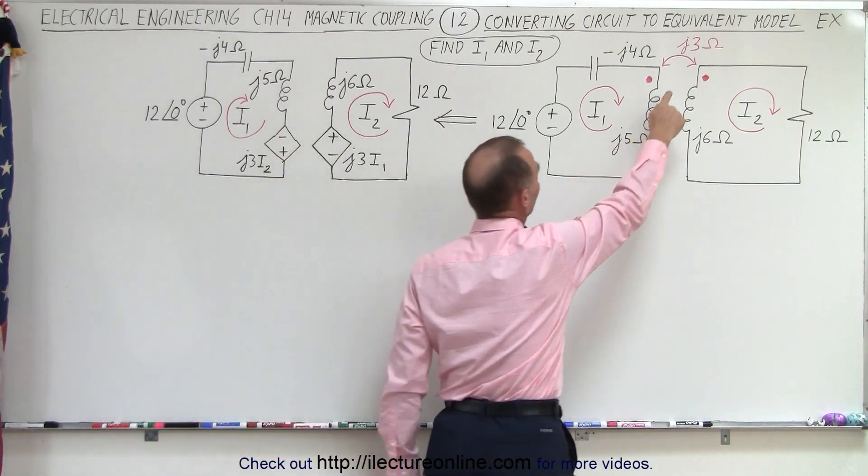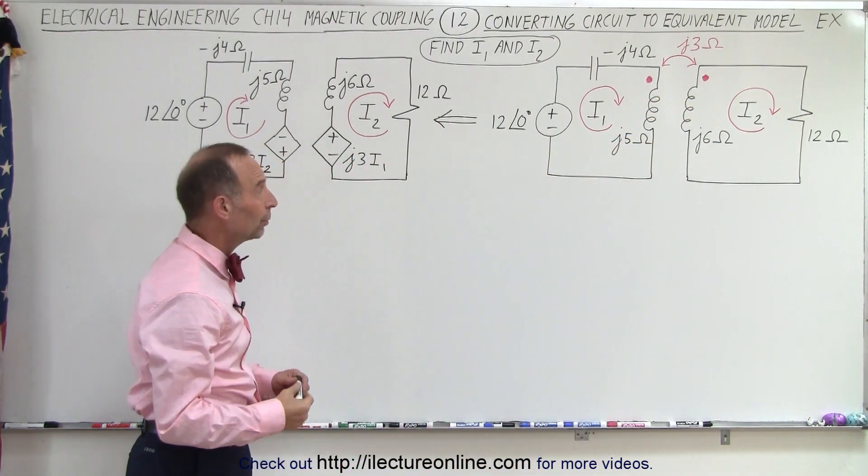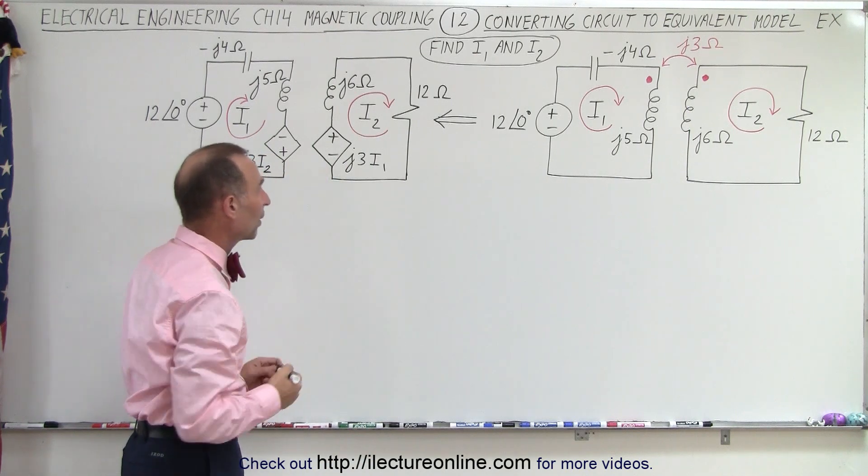Notice that in this case the mutual inductance is going to be J3 omega. So how do we do that? We're going to sum up all the voltages around both of the loops.